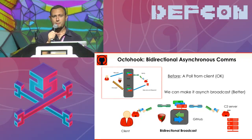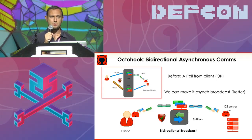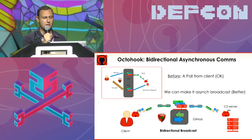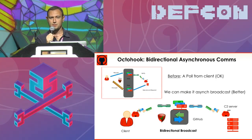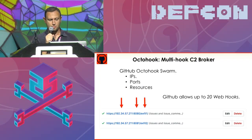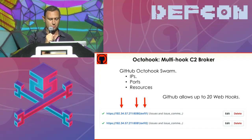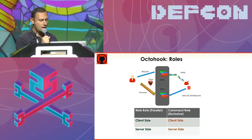It turns out that webhooks can work both ways, and at GitHub you can do 20 of those webhooks. So why not establish two-way communication from our client directly to the C2 over the C2 broker? Now we have two webhooks — one goes to the client side, the other goes to our C2 — and we achieve real-time communication that way.